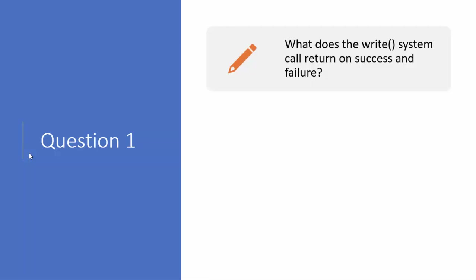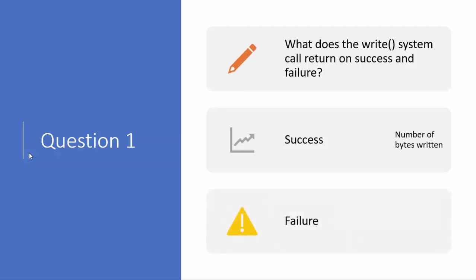The write system call on success returns the number of bytes written — how many bytes it was able to write on the file descriptor. For example, if you call write(1, "hello", 5), it writes 'hello' to the screen and returns 5. Whatever the count of data written, that count is returned on success.